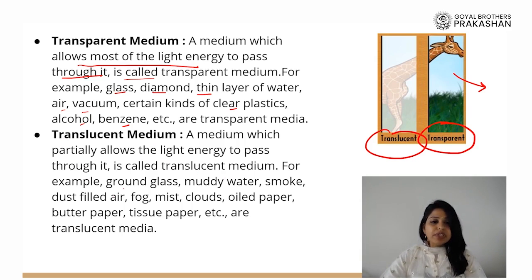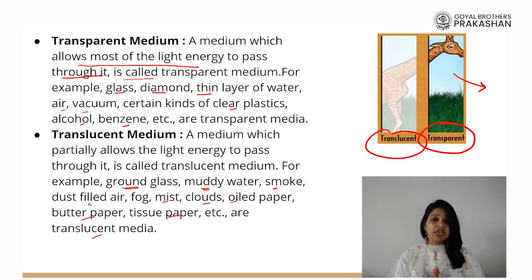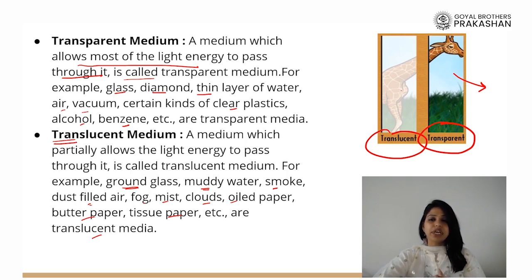Examples of translucent mediums include ground glass, muddy water, smoke, dust-filled air, fog, mist, clouds, oil paper, butter paper, and tissue paper — materials through which we can make out that something is there on the other side but we are not able to see exactly what it is. So the giraffe is visible clearly from the transparent side but not from the translucent side.